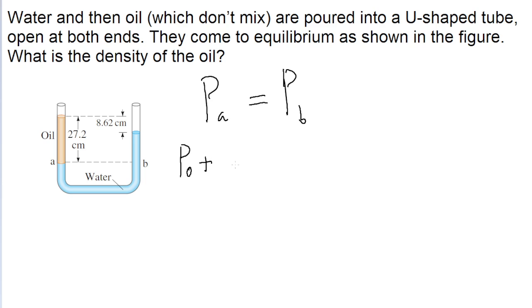Then there's going to be the gauge pressure, which is the pressure from that column of oil just above where point A is. And so remember that gauge pressure is equal to density multiplied by the gravitational acceleration multiplied by the depth. So this is going to be the density of the oil multiplied by the gravitational acceleration multiplied by the depth of the oil. So that is our expression for the pressure at point A.